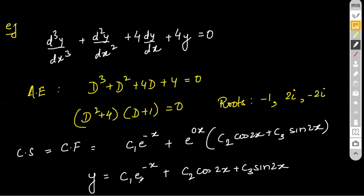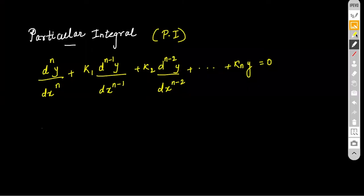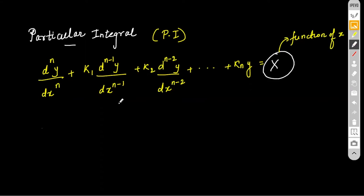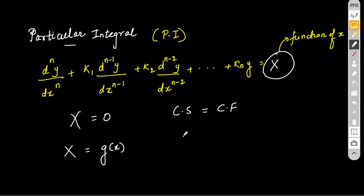Now let's talk about particular integrals. Particular integrals are relevant when the right-hand side is not zero — it's some function g(x). If the right side is zero, the complete solution is just the CF. But if there's a function of x, the complete solution = CF + PI.